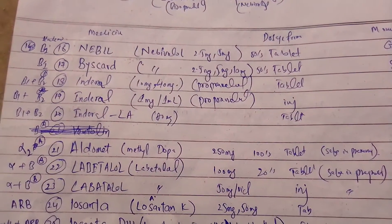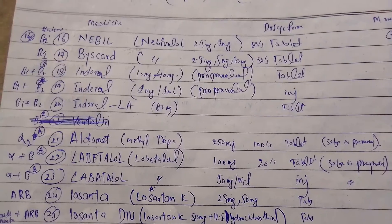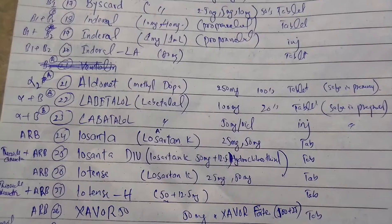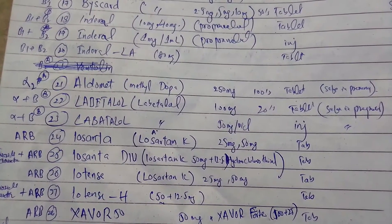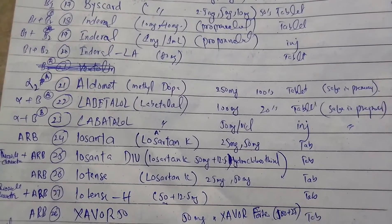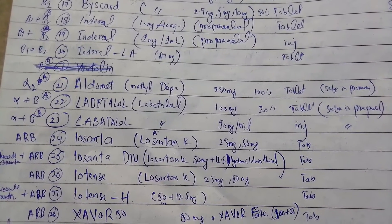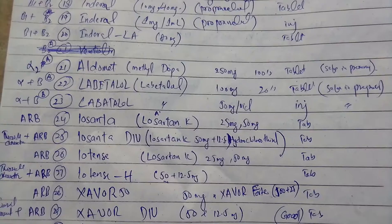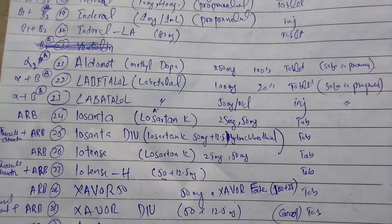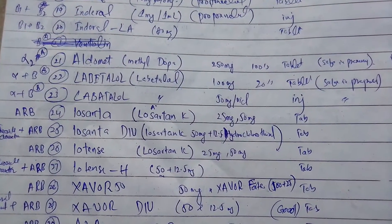Raw LA, with the generic name propranolol, is available in 80 mg tablets and is a selective beta blocker. Aldo Meat is available in the Pakistani market in 250 mg tablet strength, with the generic name methyldopa. These medicines are safe in pregnancy — methyldopa is an alpha-2 agonist. Labetalol is both an alpha and beta blocker, available in 100 mg tablets and safe in pregnancy emergencies.